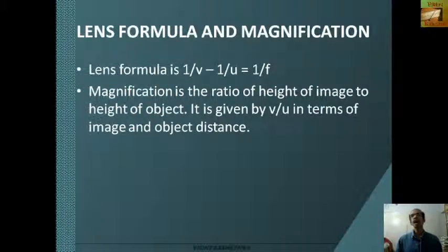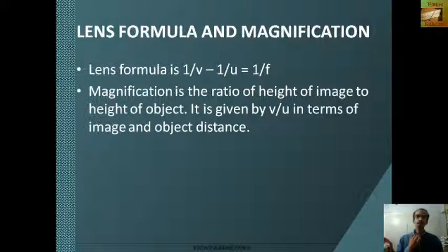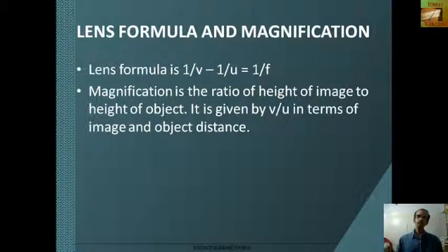Lens formula and magnification. The lens formula is given by 1/v minus 1/u equals 1/f, where v is the image distance, u is the object distance, and f is the focal length of the lens. Magnification is the ratio of height of image to height of object, given by v/u in terms of image and object distance.